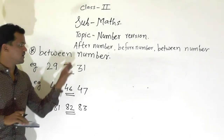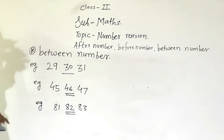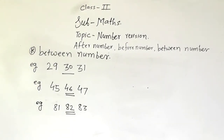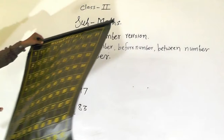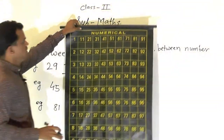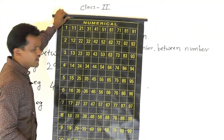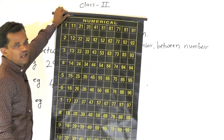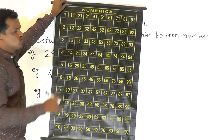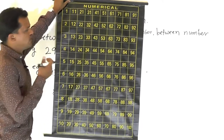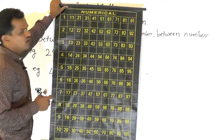Now we will understand by using the number chart. See students, this is the number chart and numbers 1 to 100 are given here. By using this chart we can understand this concept.